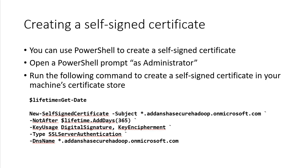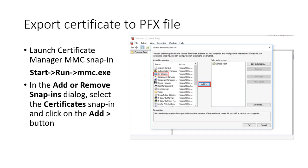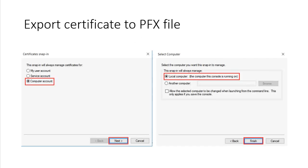Next, export the certificate. Launch the certificate manager through MMC — assuming you are using Windows, run MMC, then go to Add/Remove Snap-ins, add the Certificates snap-in. You need to be an admin here.